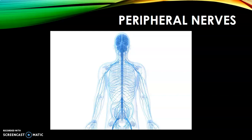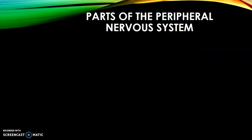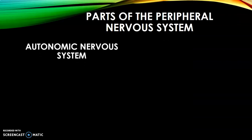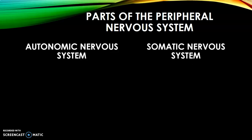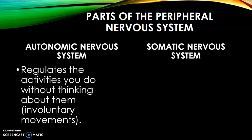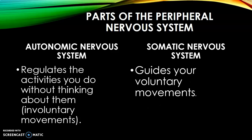The last part is the peripheral nervous system, located outside the spinal cord in your extremities and other organs. The peripheral nervous system is divided into the autonomic and somatic nervous systems. The autonomic nervous system regulates activities you do without thinking — involuntary movements like the heartbeat, which beats automatically without any thought. The somatic nervous system guides voluntary movements — things you need to consciously think about before doing, like grabbing your mouse.